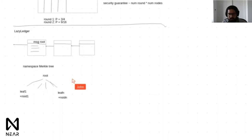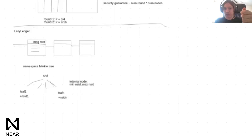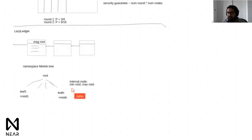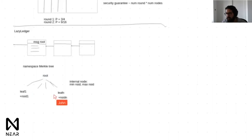Each leaf has one namespace ID associated with it. For internal nodes, the hash function outputs a min and max namespace ID. So it's essentially a Merkle interval tree that allows range proofs. Assuming leaves are ordered by namespace ID, you can prove all leaves for a particular namespace — and whoever verifies the proof knows those are all the leaves for that namespace.